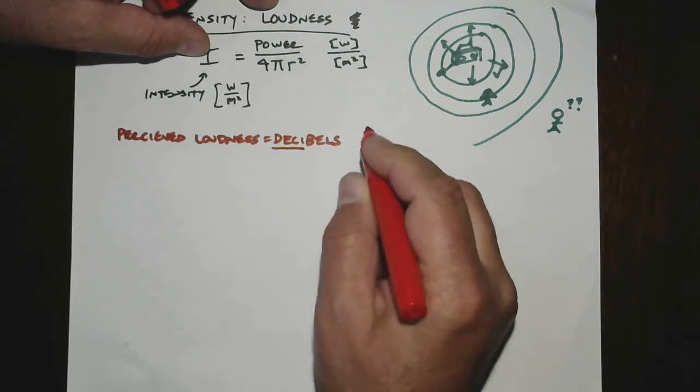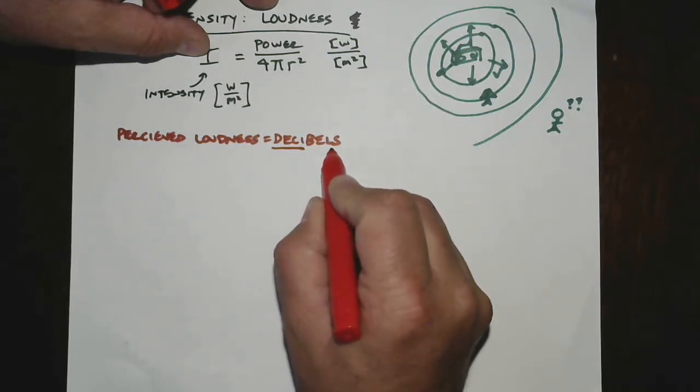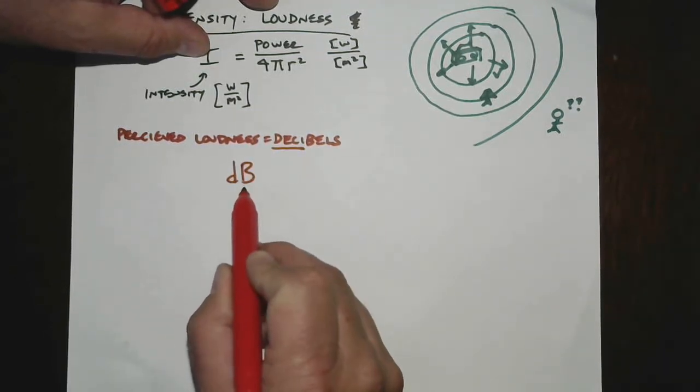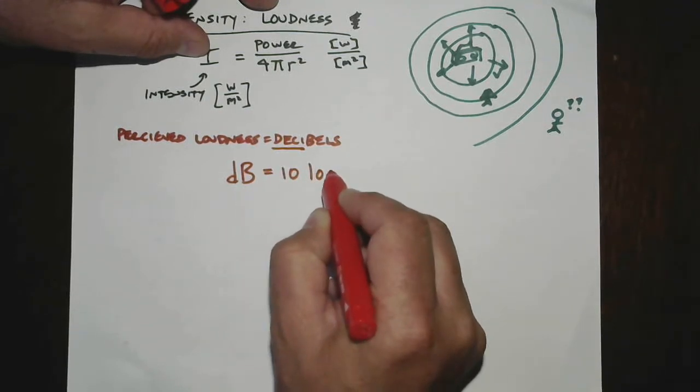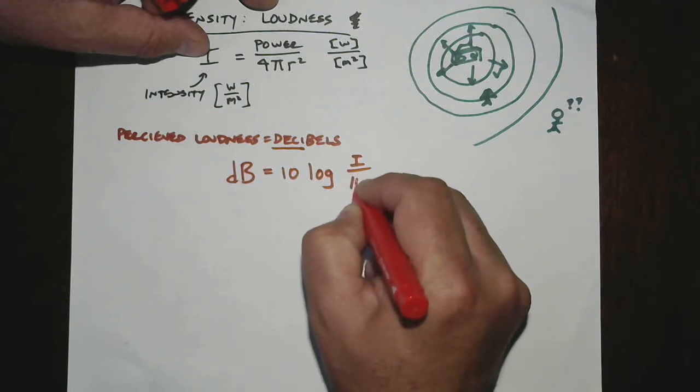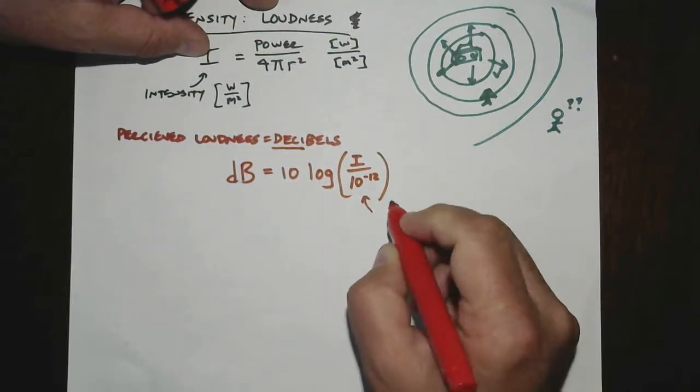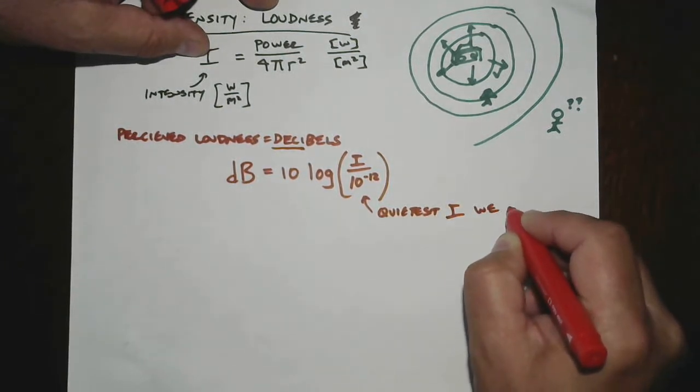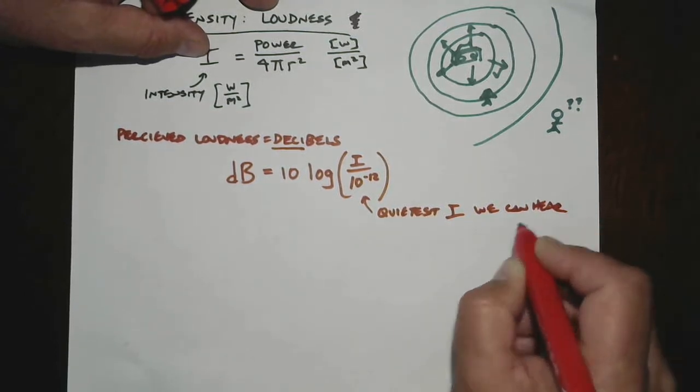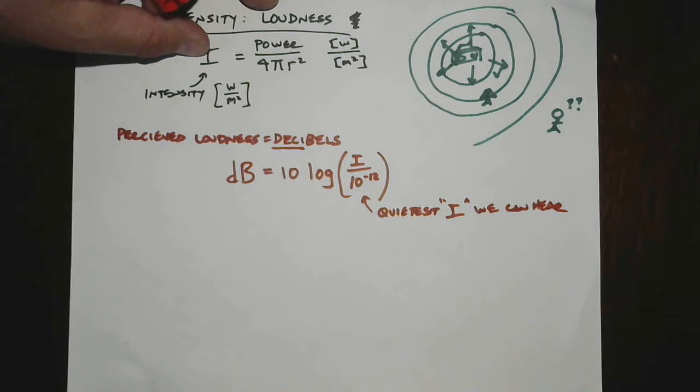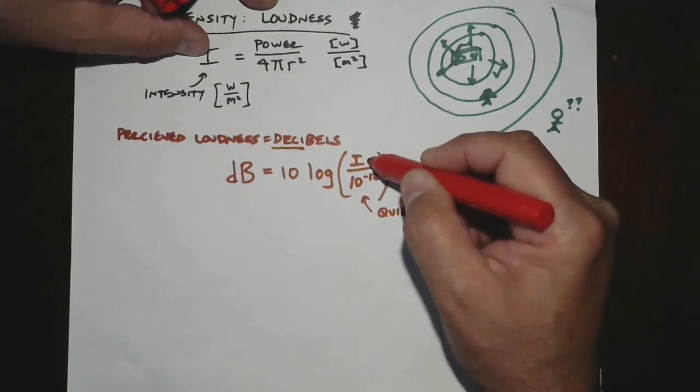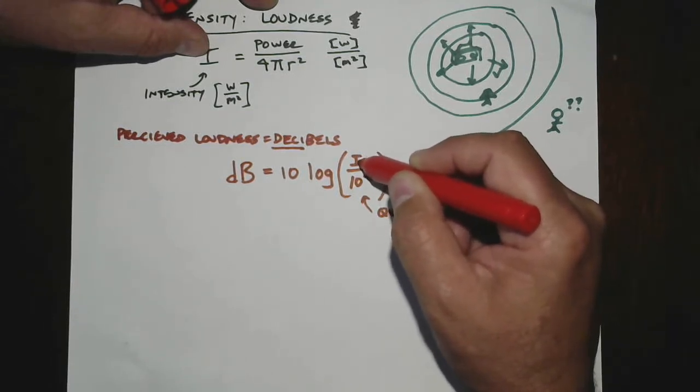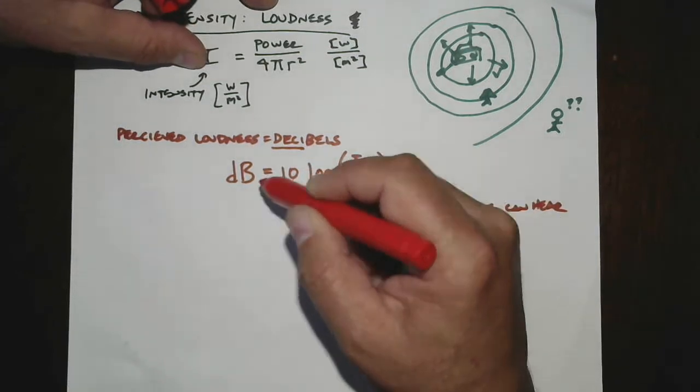Decibels, which deci means a tenth. So really, the unit of sound perceived loudness is a bell, but we tend to measure it in decibels. The number of decibels, abbreviated with a small d followed by a big B, is 10 times the log of the intensity of the sound divided by 10 to the minus 12. Now, 10 to the minus 12 is actually the quietest sound intensity we can hear. The quietest intensity that we can hear is 10 to the minus 12 watts per meter squared. Basically what we're saying is whatever sound is above your threshold of hearing, 10 to the minus 12, however high that is above that, take the log of that, multiply that by 10, you got the decibels.